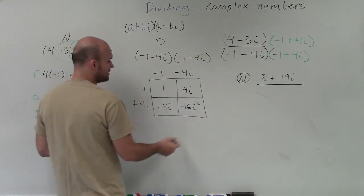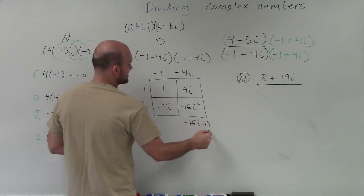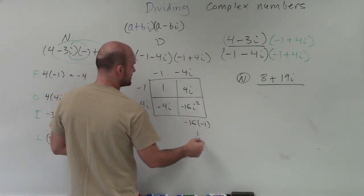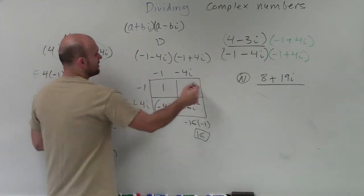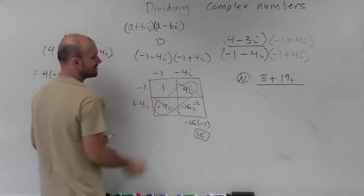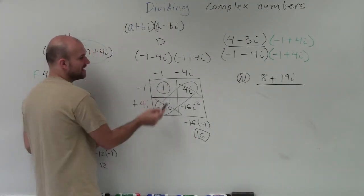Now remember, i squared equals negative 1. So we have negative 16 times negative 1. And that actually ends up equaling a positive 16. So we notice we have positive 4i, negative 4i. Those are going to add up to 0. Then I have 16 and 1,